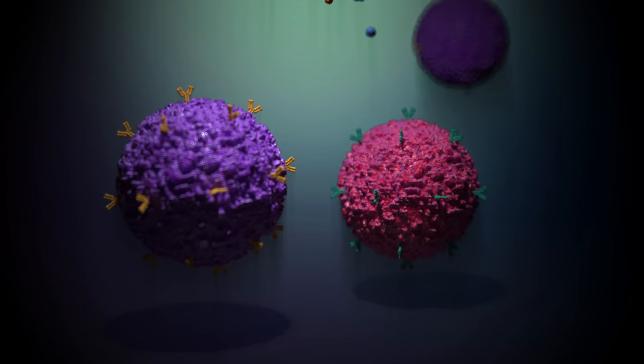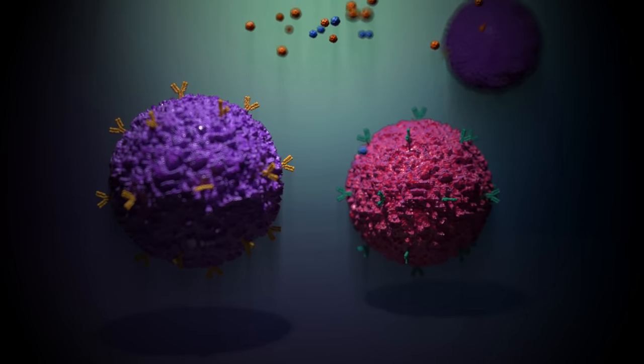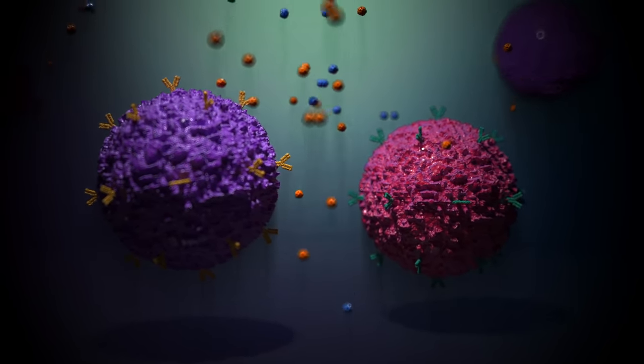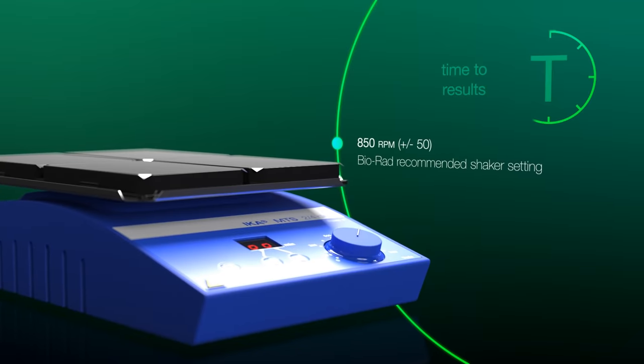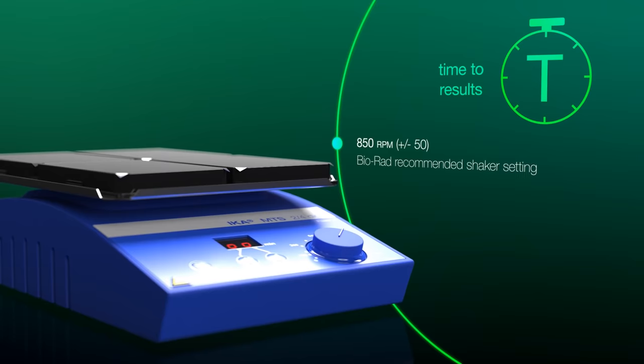During assay development, high-specificity antibody pairs are vetted so that you can multiplex at high-plex levels, reducing plates or runs, shortening incubation times and getting to a result faster.